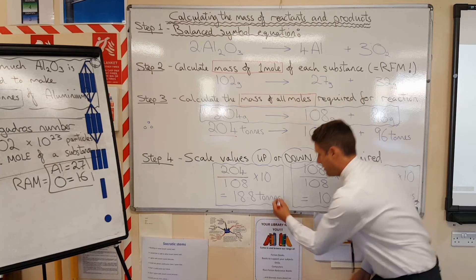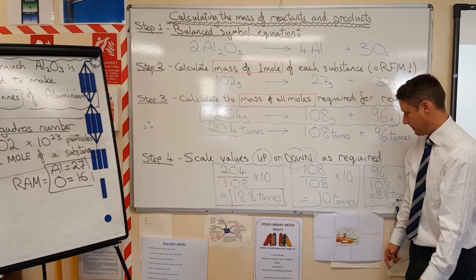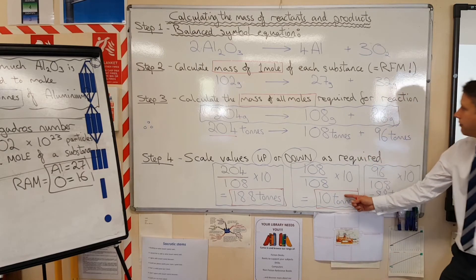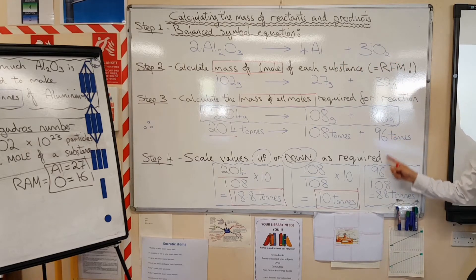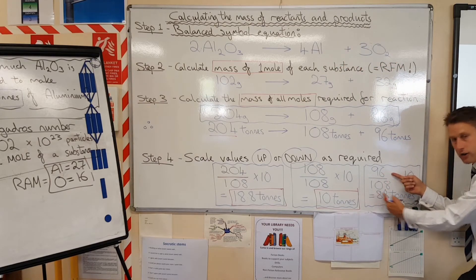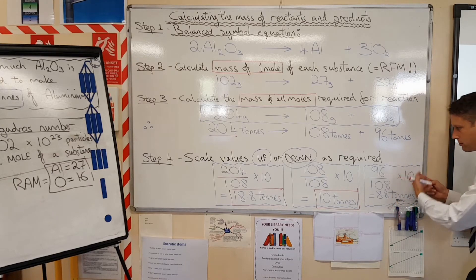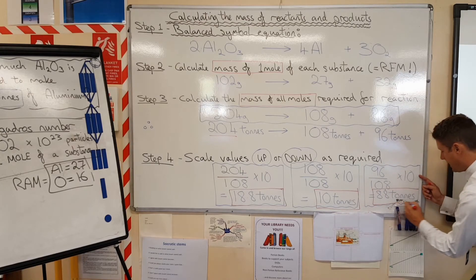Again, that will give us our answer of 18.8 tonnes. That makes 10 tonnes of aluminum, and it also makes 96 divided by 108 again, multiplied by 10 to find how much it would be with 10 tonnes of that. 8.8 tonnes.